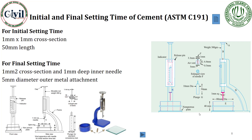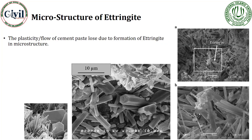There is an onset of strength gain after the final setting. In chemical terms, the initial setting is basically the formation of ettringite needles. You can see that the moment you mix the water into the cement paste, the formation of a hydration product initiates. There are three basic hydration products: ettringite, calcium silicate hydrate, and calcium hydroxide. The ettringite is formed as a result of setting of cement.